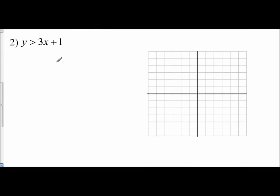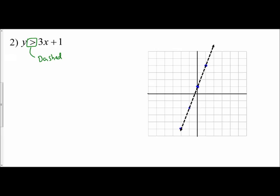Let's try number two: y is greater than 3x plus 1. This is already in slope-intercept form. I have a y-intercept of 1 and a slope of 3, so go up 3 right 1, and down 3 left 1. Same two questions: what type of line do I use? Since it's greater than, I'm going to use a dashed line. I draw the dashed line and extend it across the whole graph.